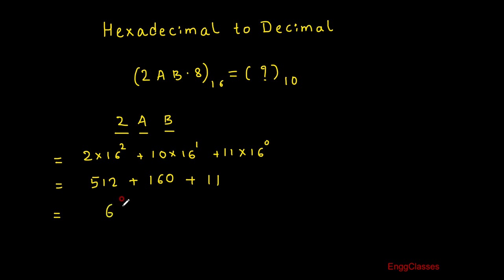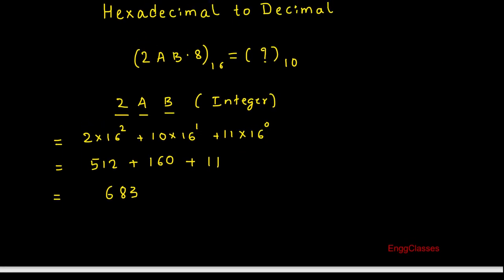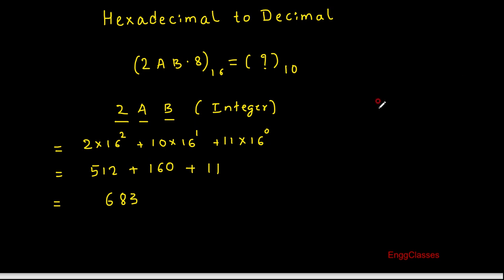So 683 is the answer for the integer part. Now let me consider the fractional part. The fractional part is 0.8, and I also need to convert this into its equivalent decimal number.